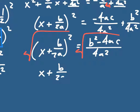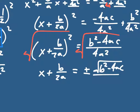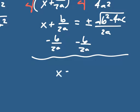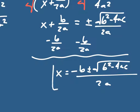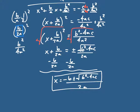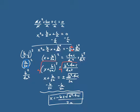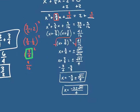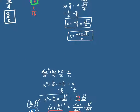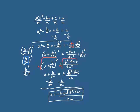Taking the square root of both sides gives x plus b over 2a equals plus or minus the square root of b squared minus 4ac over 2a, since the square root of 4a squared is 2a. Subtracting b over 2a from both sides gives x equals negative b plus or minus the square root of b squared minus 4ac, all over 2a. That's the quadratic formula — that's how we get it. Completing the square explains the quadratic formula, and historically, completing the square came first.